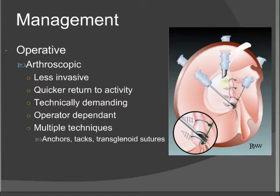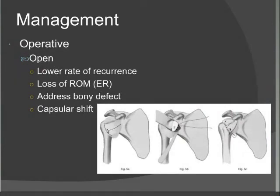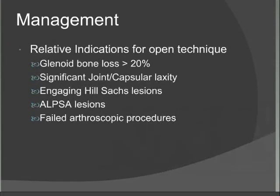Open treatment still shows a lower rate of recurrence, though generally at the expense of loss of range of motion, especially external rotation. Open treatment allows us to address bony defects or significant capsular defects, and is typically combined with a capsular shift procedure. Relative indications for open treatment include significant bone loss, the need for a capsular shift, an engaging Hill-Sachs lesion, ALPSA or HAGL lesions requiring open stabilisation, and previously failed arthroscopic procedures.